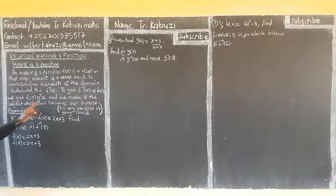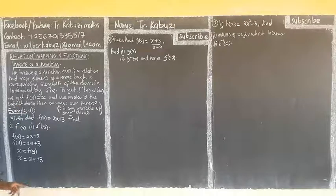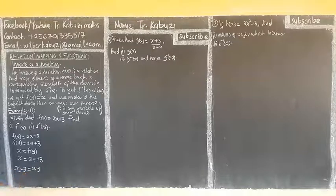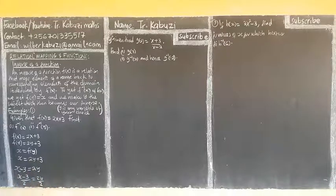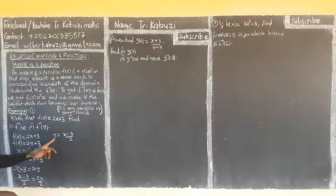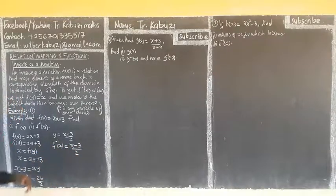Now after this, I equate x to f of y. So x will be equal to f of y. My f of y is 2y plus 3. Now we make y the subject. I first take 3 to the other side — it becomes negative. So x minus 3 equals 2y. I divide both sides by 2 to remove the coefficient. So my y will be x minus 3 over 2. Now y becomes the inverse, so our f inverse of x becomes x minus 3 over 2. This is the inverse of this function.